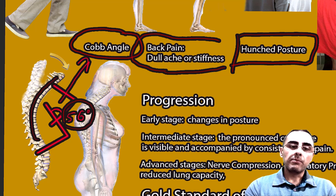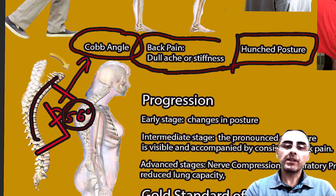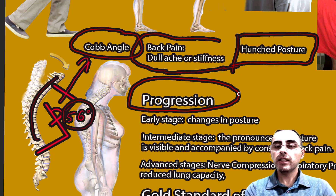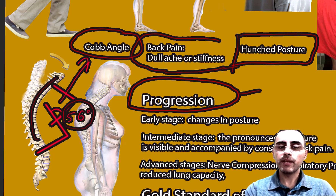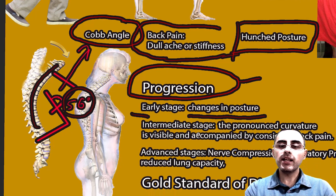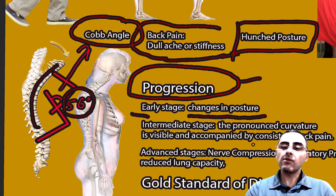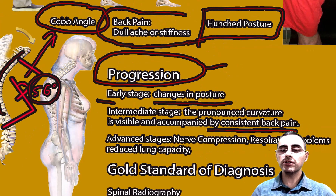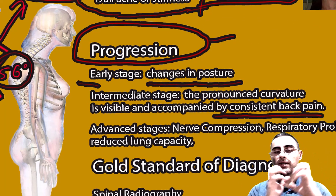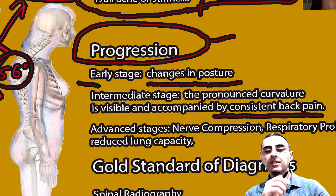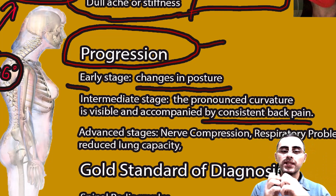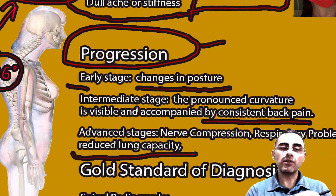A key problem with kyphosis is that it progresses over time, especially at older ages. At the early stage, the only sign is changes in posture. At the intermediate stage, there is pronounced curvature accompanied by back pain — hunched posture and back pain together indicate intermediate stage. At the advanced stage, there is nerve compression, spinal cord compression, and respiratory symptoms such as difficulty breathing and frequent infections due to reduced lung capacity.